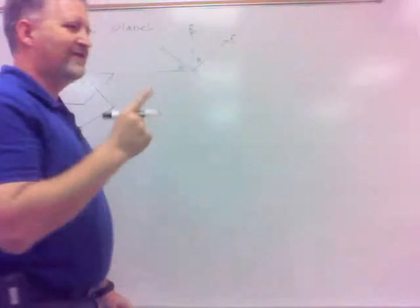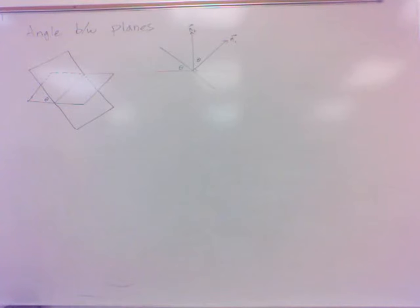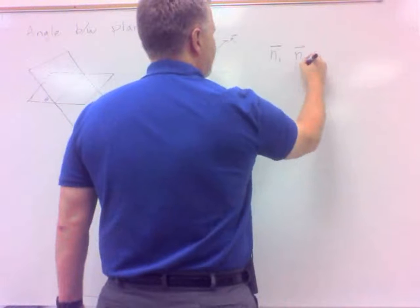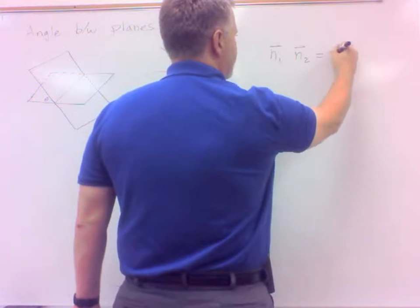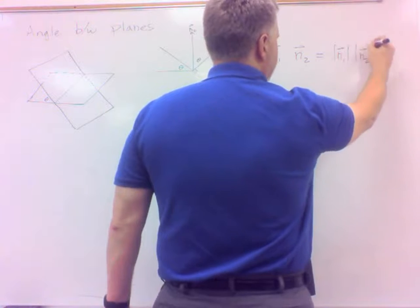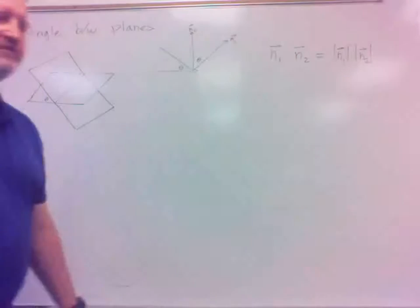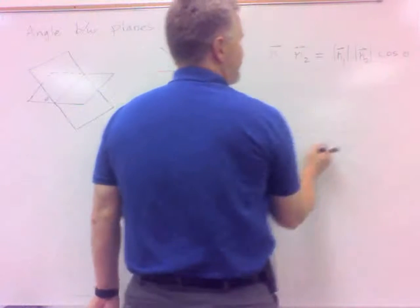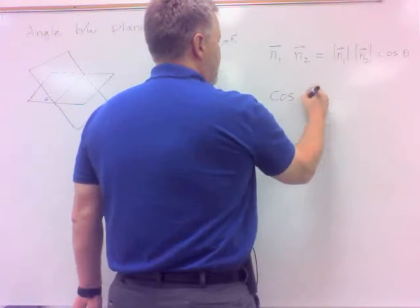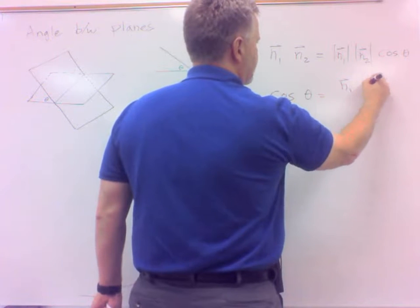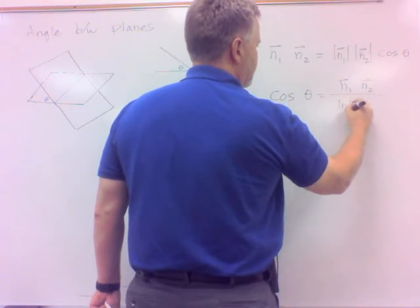Now, what do we know about angle between vectors? Isn't the dot product of two vectors equal to the product of the magnitudes times cosine of the angle between them? And so the cosine of our angle between is just going to be the dot product divided by the product of the magnitudes.